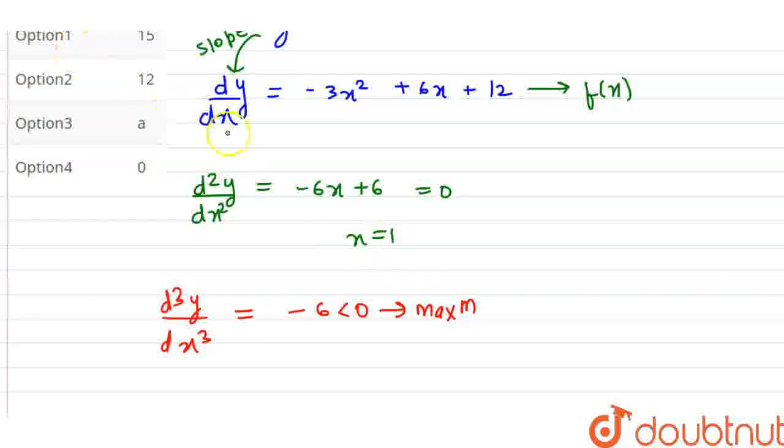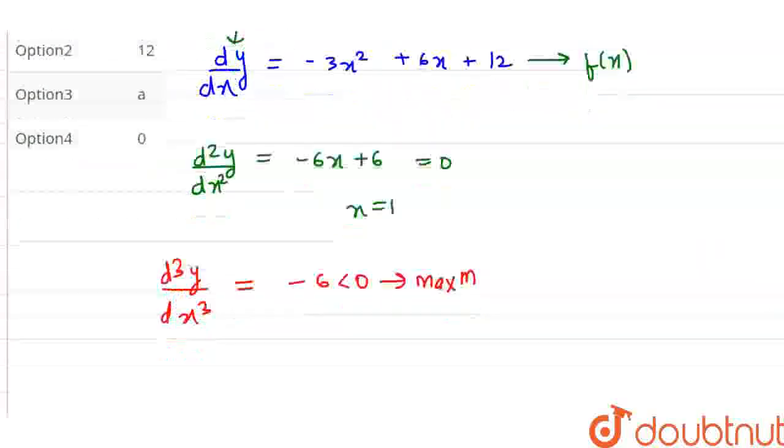And what value is at x equals to 1. So x equals to 1, we put the value in this function. We will put value in this. So the slope will be maximum.